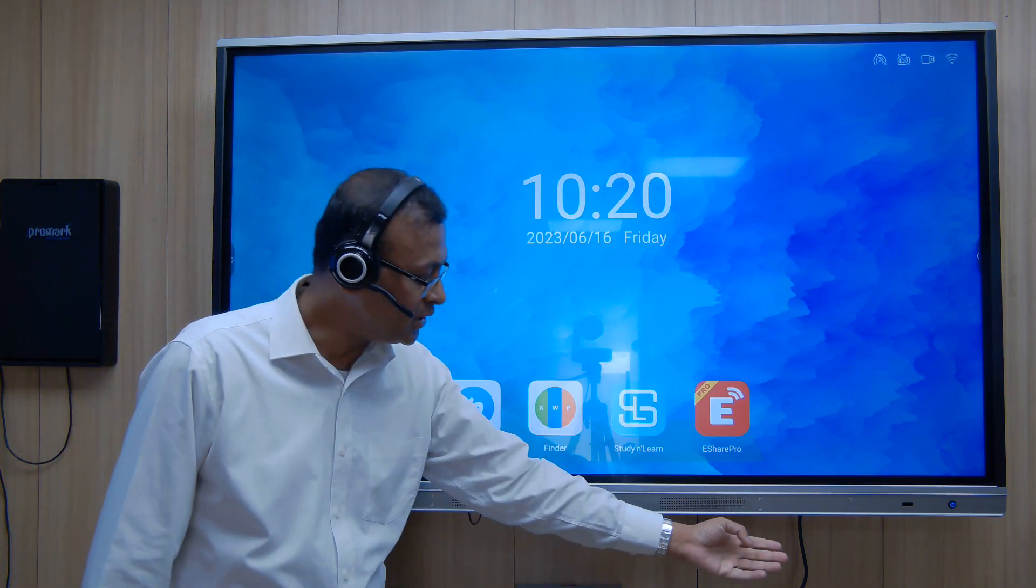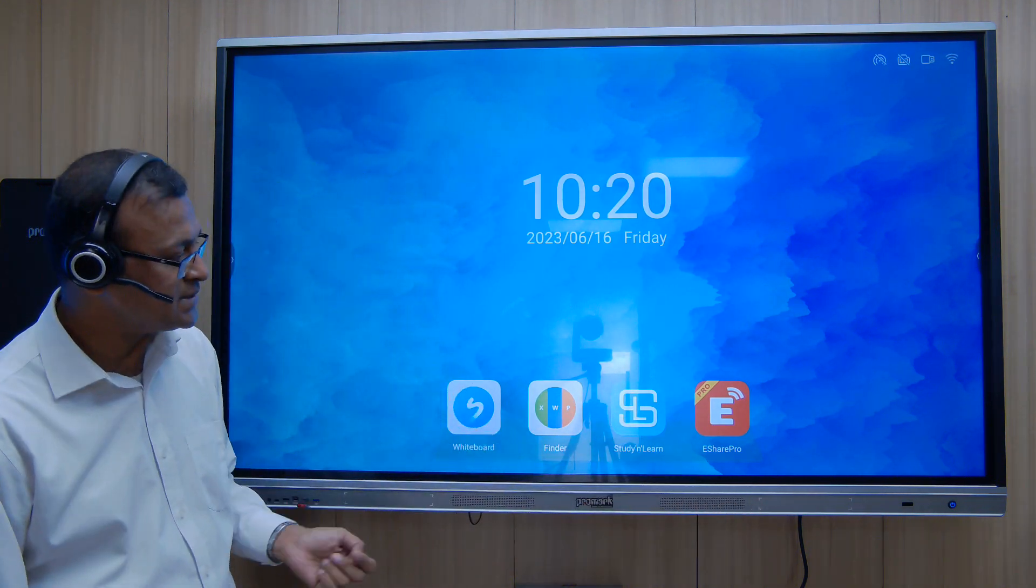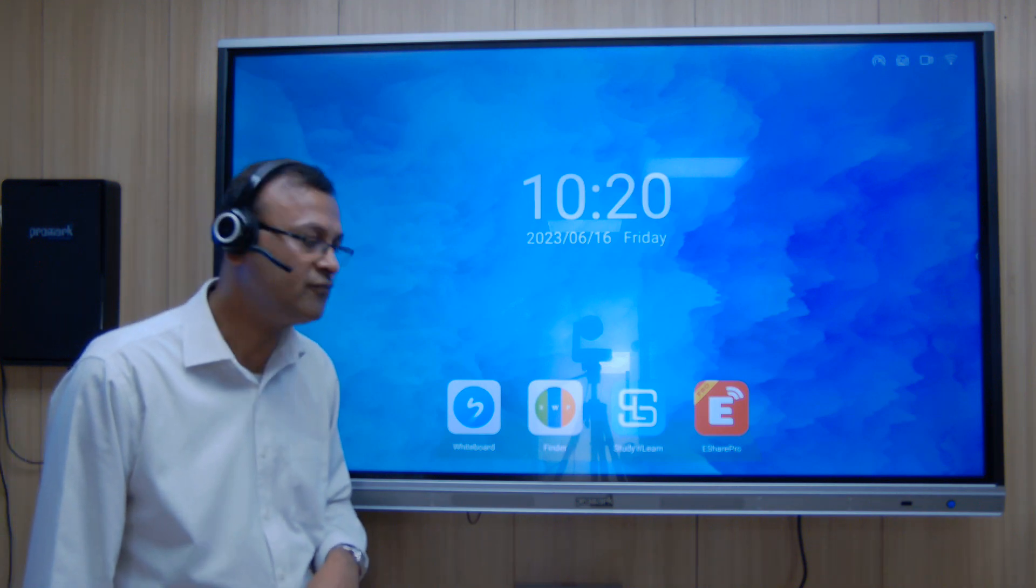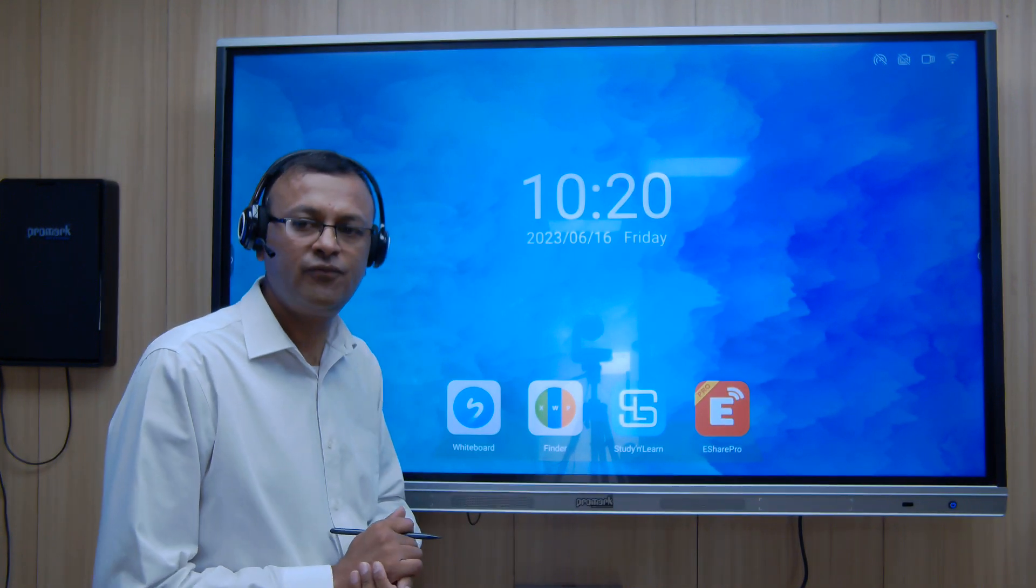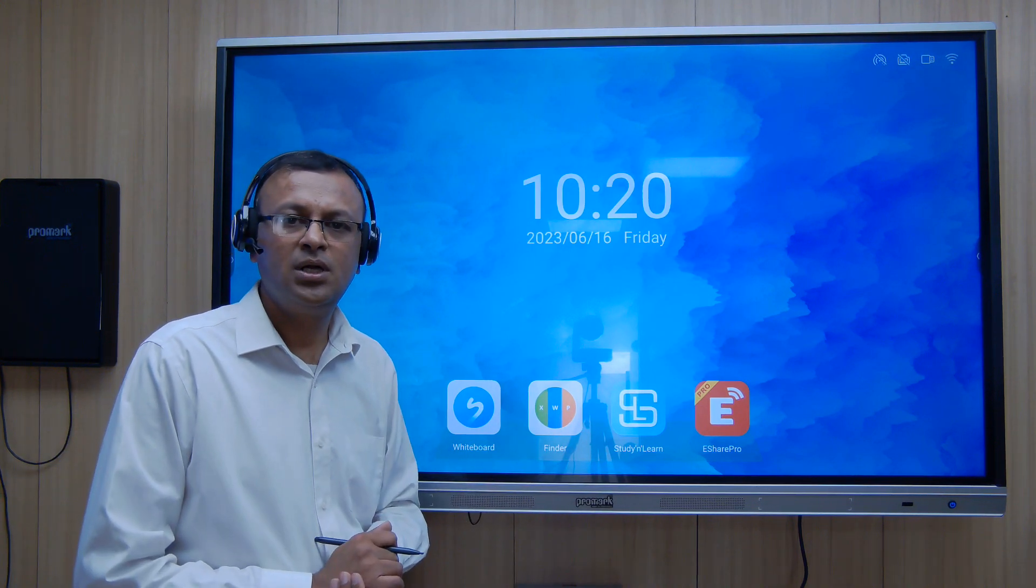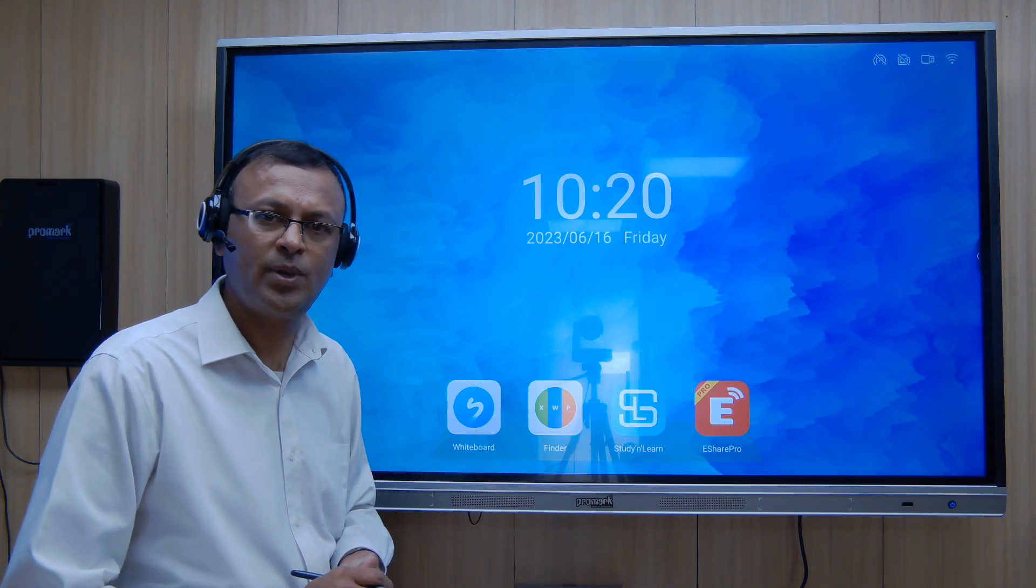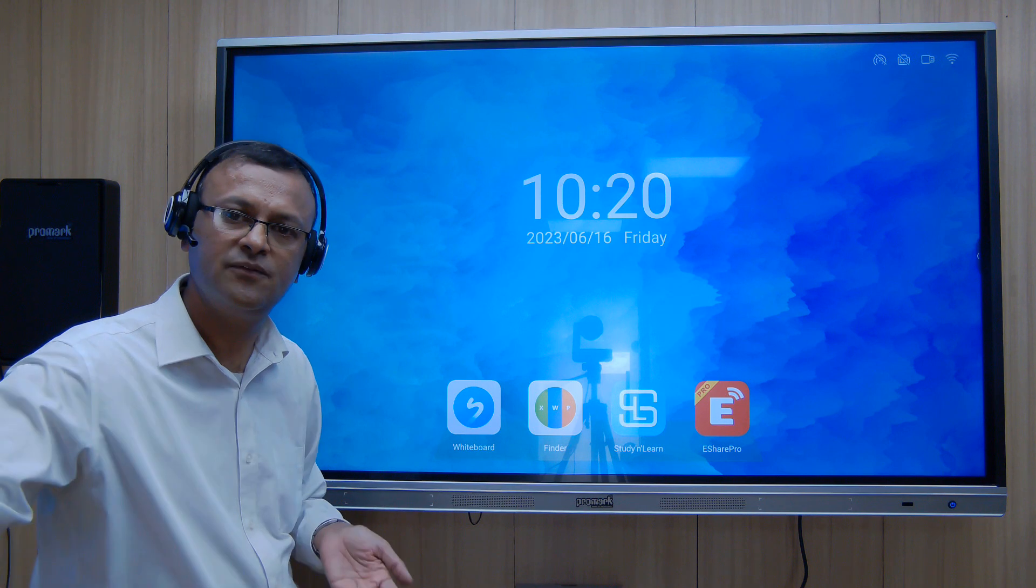And as you look down here, there are two speakers, dual speakers. This panel comes with dual speakers of 20 watts each, totaling 40 watts, which is very good for a big size room of about 25 to 35 square feet, 25 to 35 feet in length.